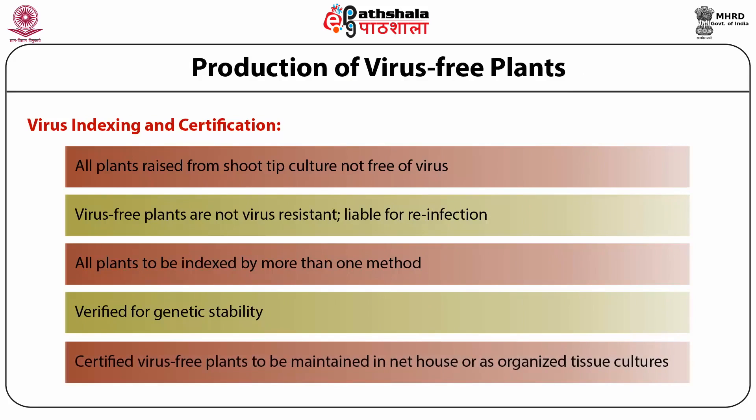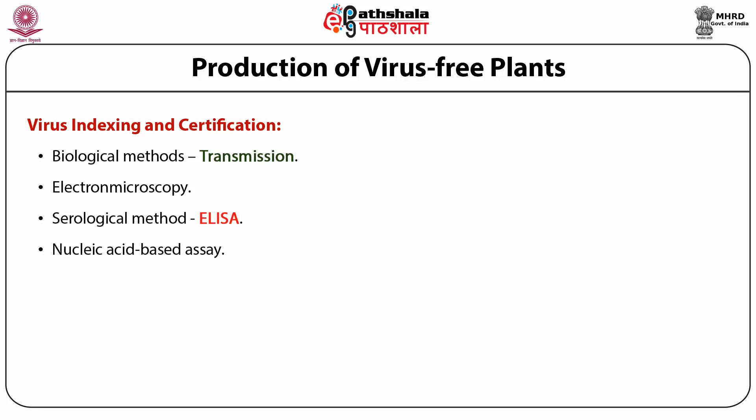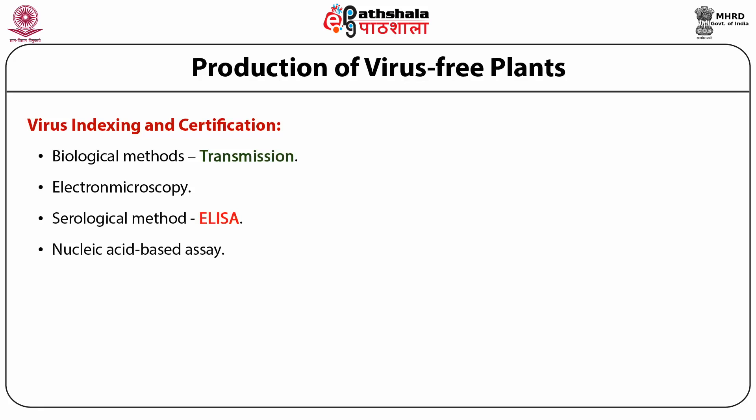Certified virus-free plants must be maintained in a net house, otherwise they will get reinfected. Methods to check virus presence include biological transmission methods, electron microscopy, serological methods such as ELISA, and nucleic acid-based methods like PCR, nucleic acid hybridization, complementary RNA, and DNA microarray technology.